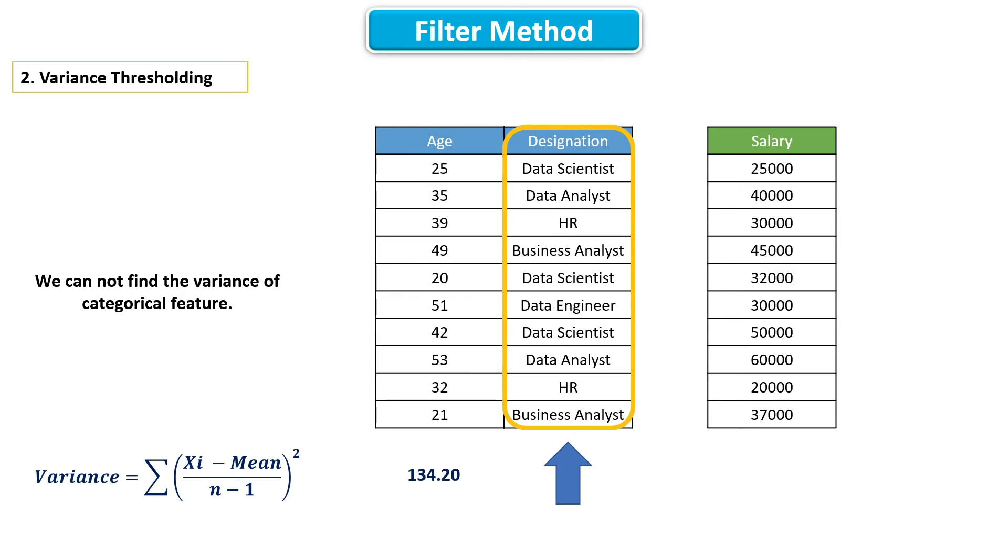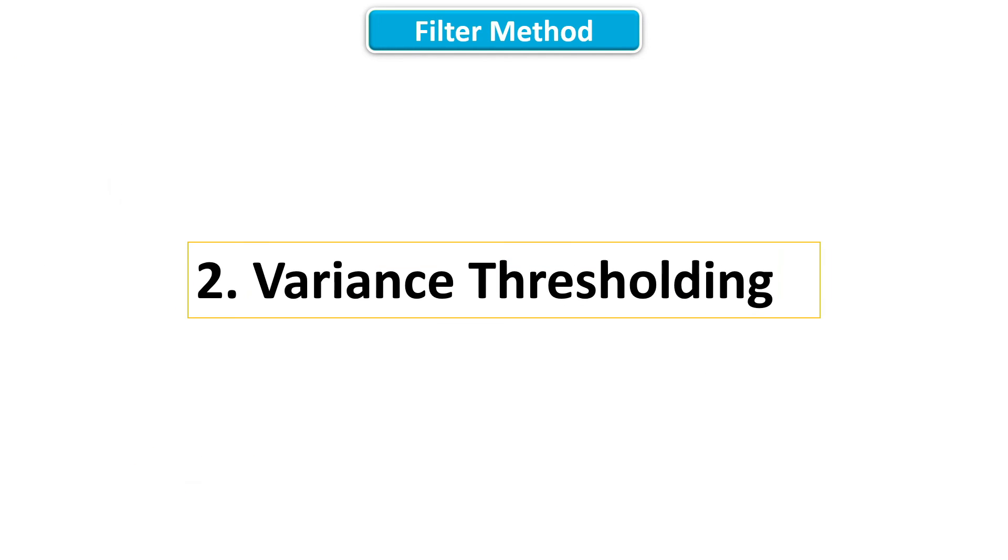Finally, as we cannot find the variance of categorical features, it is not possible to apply variance thresholding on categorical features. We can only apply variance thresholding on numeric features. That's all about variance thresholding.